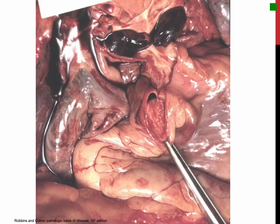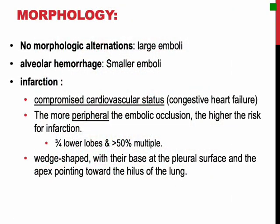This figure shows the gross appearance of a large saddle embolus from the femoral vein, lying astride the main left and right pulmonary arteries. The morphologic changes of the embolus depend also on its size and general circulatory status. Some large emboli may cause sudden death so no morphologic alterations can be appreciated. Alveolar hemorrhage may be seen with a smaller embolus as a result of ischemic damage to the endothelial cells. With compromised cardiovascular status, as in congestive heart failure, infarction results. The more peripheral the embolic occlusion, the higher the risk for infarction — explaining why three-fourths of all infarcts affect the lower lobes, and more than one-half are multiple.